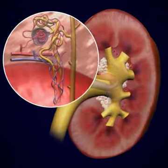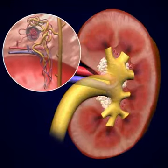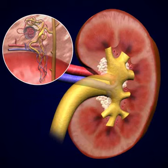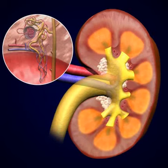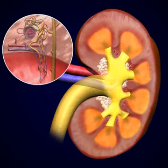Urine from the collecting tubules then exits from the pyramid through the papilla and enters the calyx and renal pelvis before flowing into the ureter.